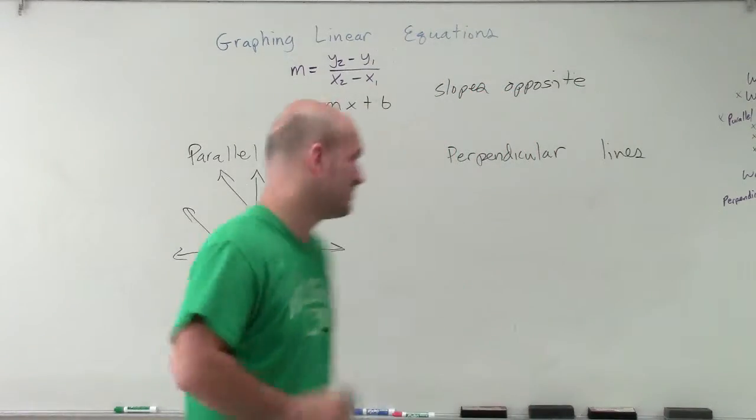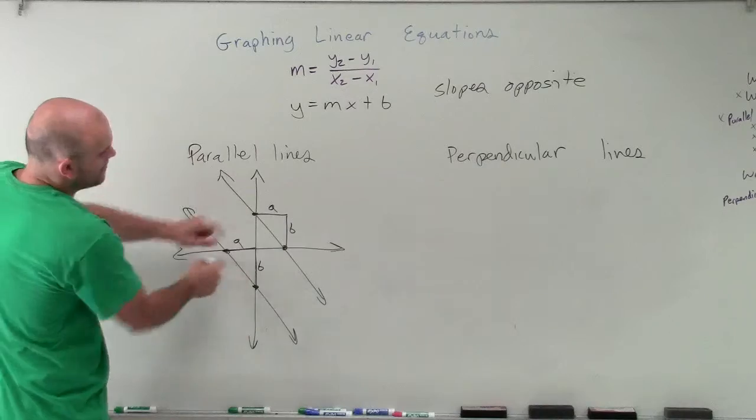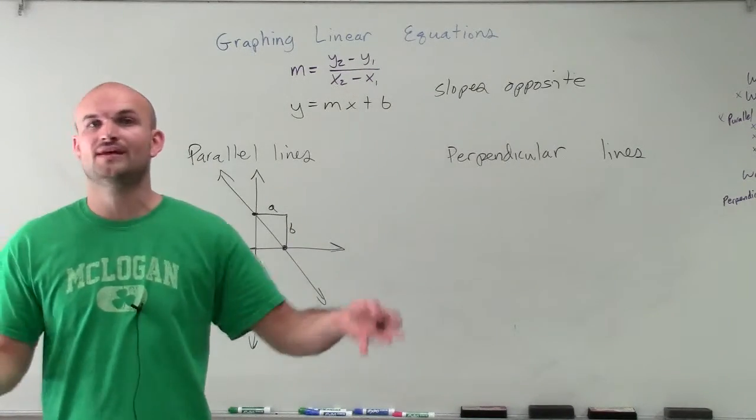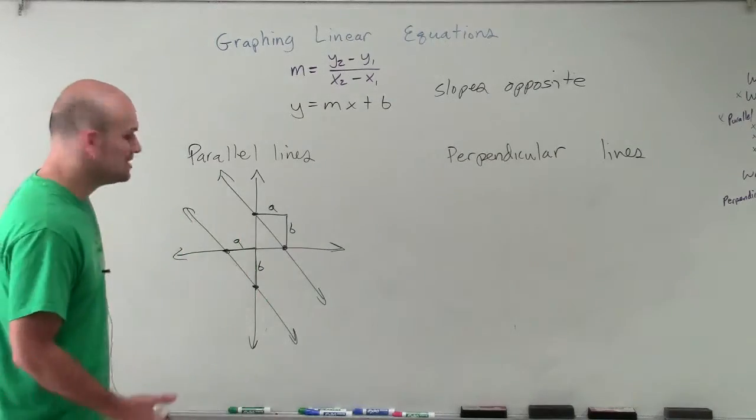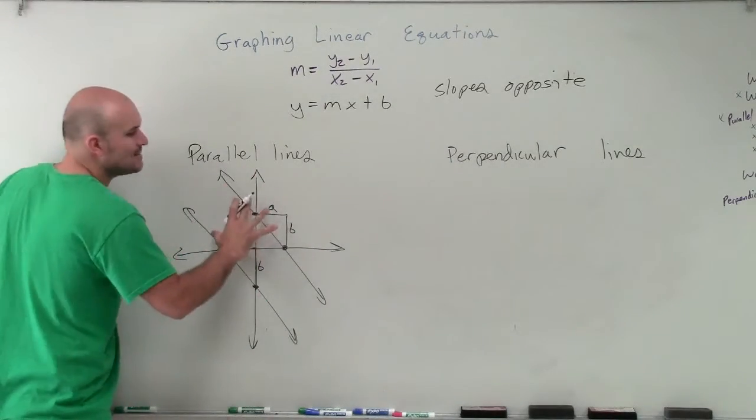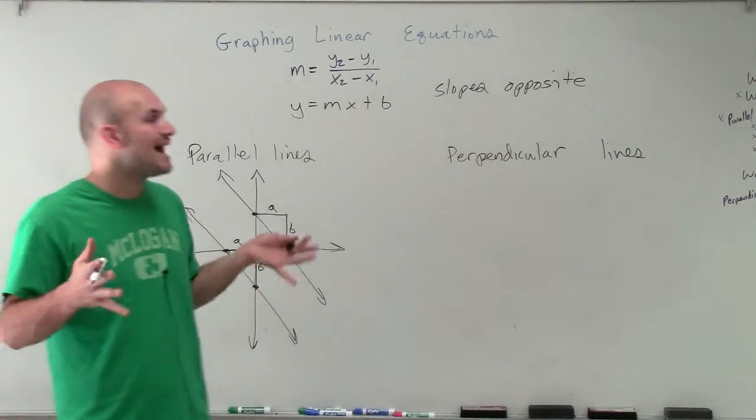And the other very important thing about parallel lines is they cannot have the same y-intercept. Because if they had the same y-intercept and the same slope, they'd be exactly the same line. So that's really important for us to understand about parallel lines: they have exactly the same slope, but their y-intercepts have to be different.